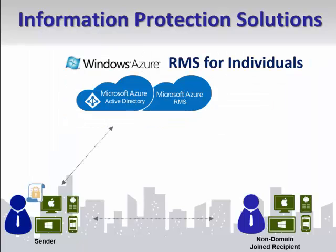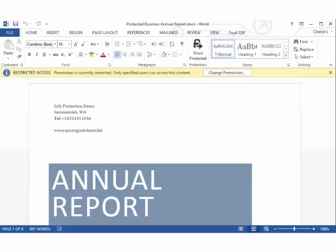Chase's partner Charlie receives the document, signs up for an RMS for Individuals account, and opens the protected document.